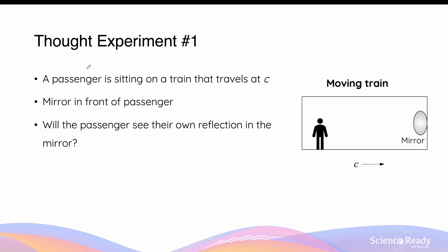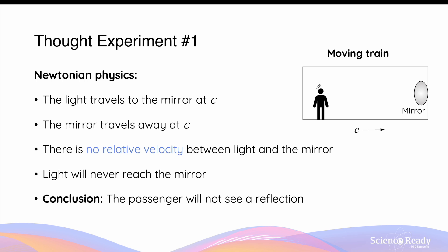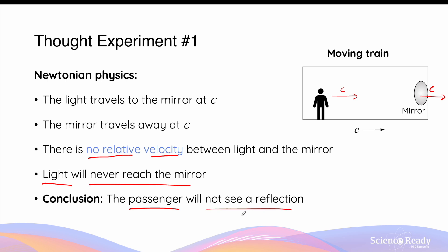A simple thought experiment can be used to understand the implications of the two postulates of special relativity. Imagine there's a passenger sitting on a train that is travelling at the speed of light. On the train, the passenger stands at the rear end of the carriage, and there's a mirror placed on the front end. The question is: will the passenger see their own reflection in the mirror when the train is moving at the speed of light? Using classical Newtonian physics, the answer is no. For the person to see their own reflection, light has to travel from the person at c towards the mirror and back to the observer's eyes. However, while light is travelling to the mirror at c, the mirror is also travelling away in the same direction at c due to the velocity of the train. So there's no relative velocity between the two, because they're travelling at the same velocity. Using Newtonian relativity, we can conclude that light will never reach the mirror, and therefore the passenger will not see a reflection of themselves.